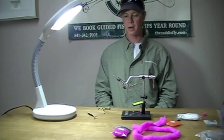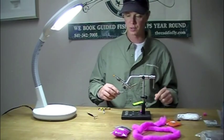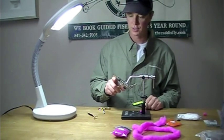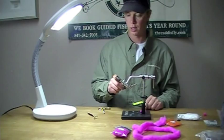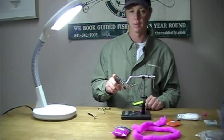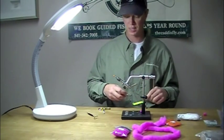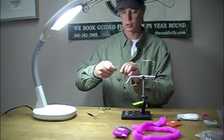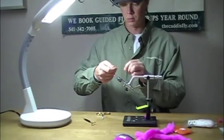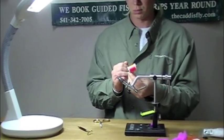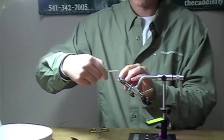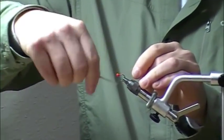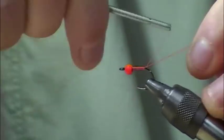Today we're going to be tying a bead head egg pattern for Winter Steelhead. I've got a C14S size 4 egg hook here from Gamagatsu. I've got a fluorescent orange 532nd bead. I'm using U140 in the fluorescent orange. Start the thread there right behind the bead and go all the way back to just past the barb.